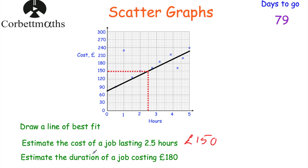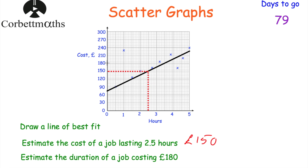The next part says: estimate the duration of a job that costs £180. So how long should a job costing £180 last? This time you go to £180 on the y-axis, go across to the line of best fit, and come down. We end up in the middle of three and four, which is 3.5 hours. So the estimated duration of a job that costs £180 would be three and a half hours.